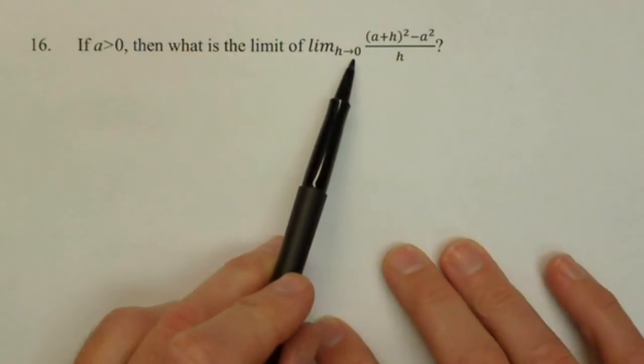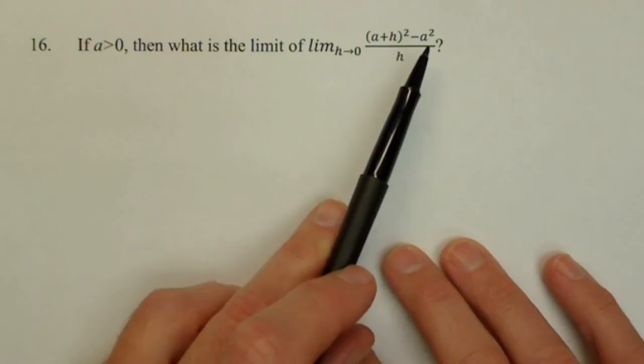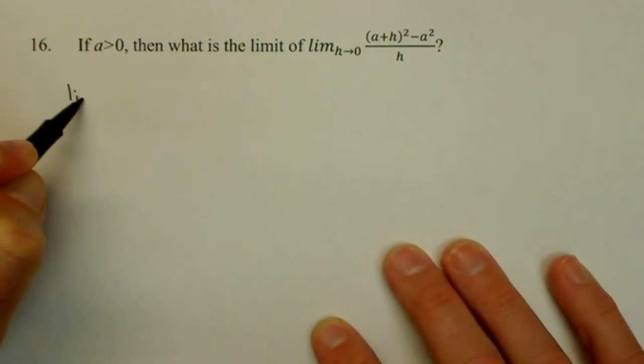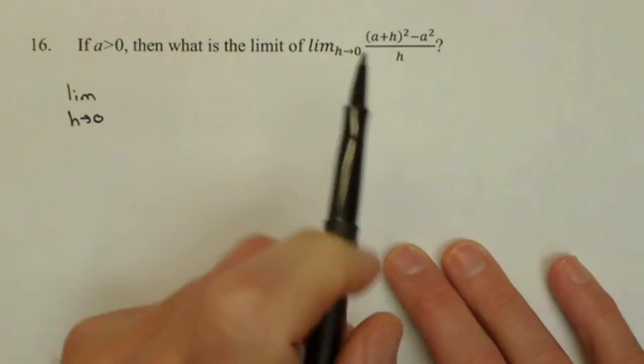So we're going to find the limit as h goes to 0 of a plus h the quantity squared minus a squared all over h. What we're going to do is some algebra to see if we can simplify this.